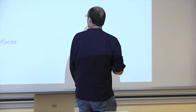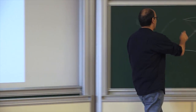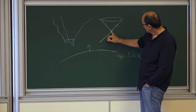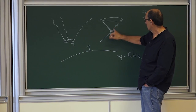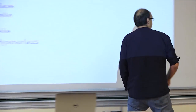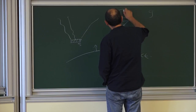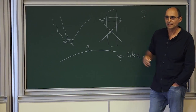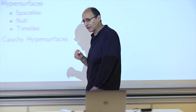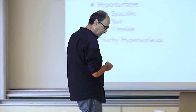We have hypersurfaces which are spacelike, hypersurfaces which are null — ruled by null geodesics — and finally timelike hypersurfaces. A timelike section in Minkowski space would be a timelike hypersurface; in that case, the metric induced is still Lorentzian — the original Lorentzian metric induces a Lorentzian metric on a timelike surface.